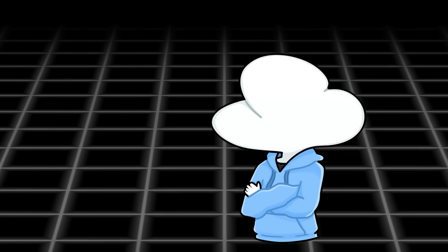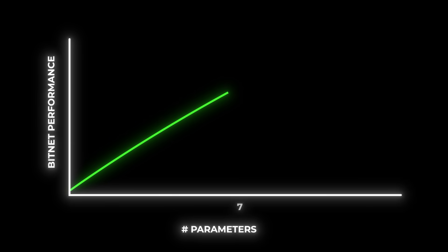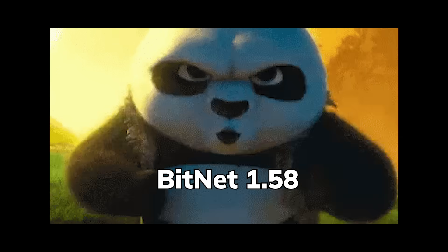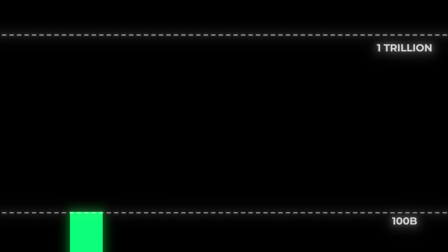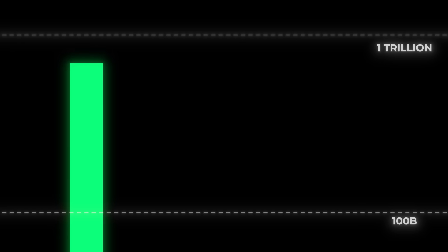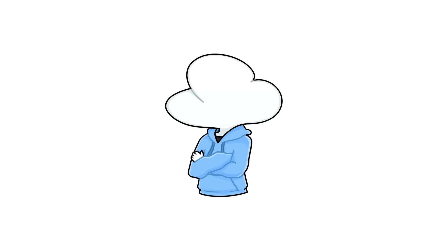So far, even though BitNet has been tested at up to 7 billion parameters and outperforms the Llama baseline, it was only being trained with 100 billion tokens. The very last hurdle is getting training tokens up to the trillion level and proving BitNet truly works at scale.